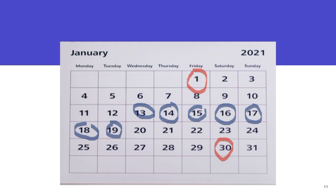The implication is that between the 13th of January and the 19th of January, those are the periods that you are most likely going to get pregnant when you have unprotected sex. Those are the periods that you are most fertile.